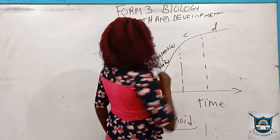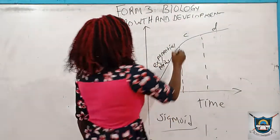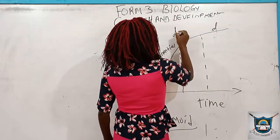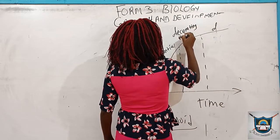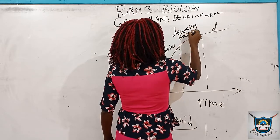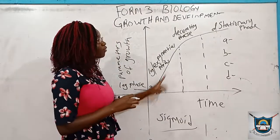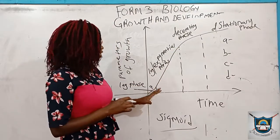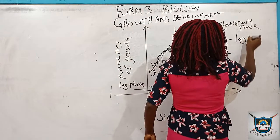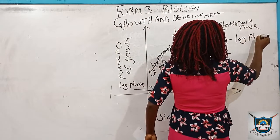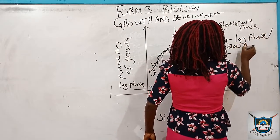Then the second phase is called the exponential phase. In summary, we can see that we have four phases. The first phase is called the lag phase, which is also called the slow growth phase.